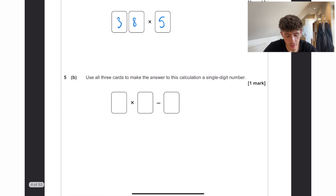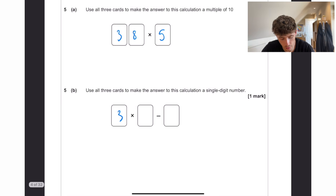Use all three cards to make the answer to this calculation a single digit number. 3 times 5 because of BIDMAS you would do that first and then take away 8 is going to give you 7.